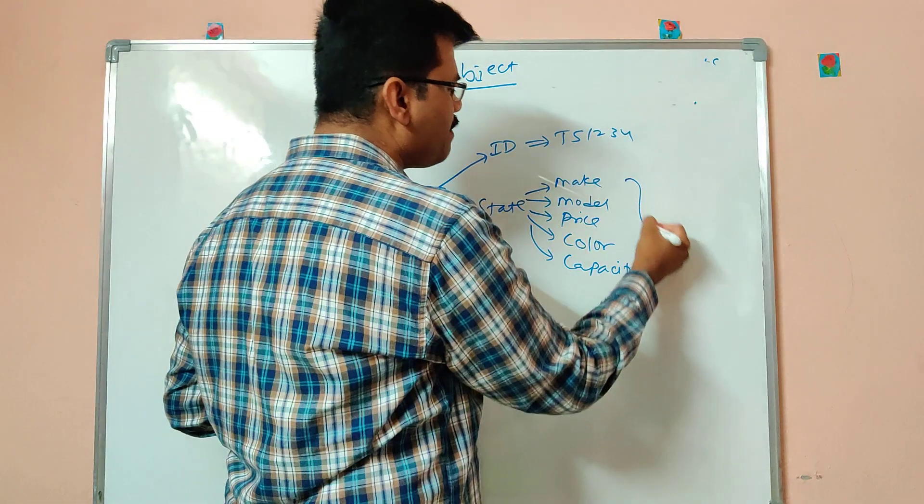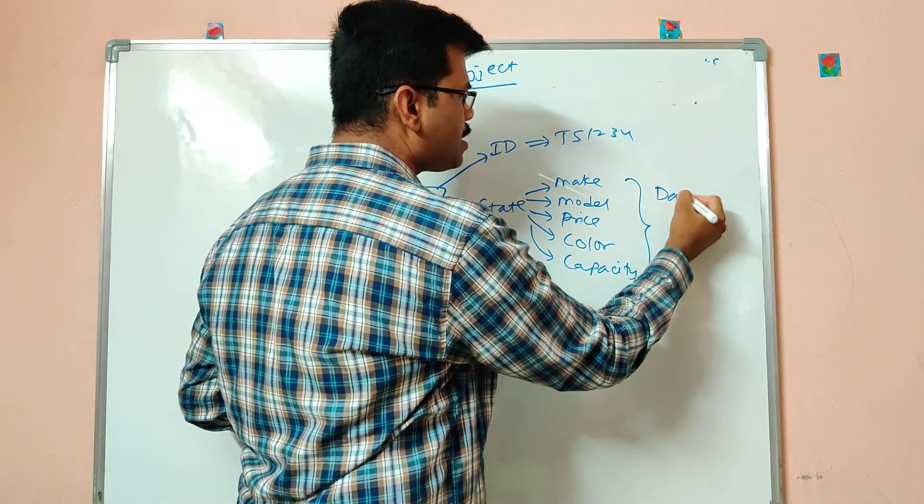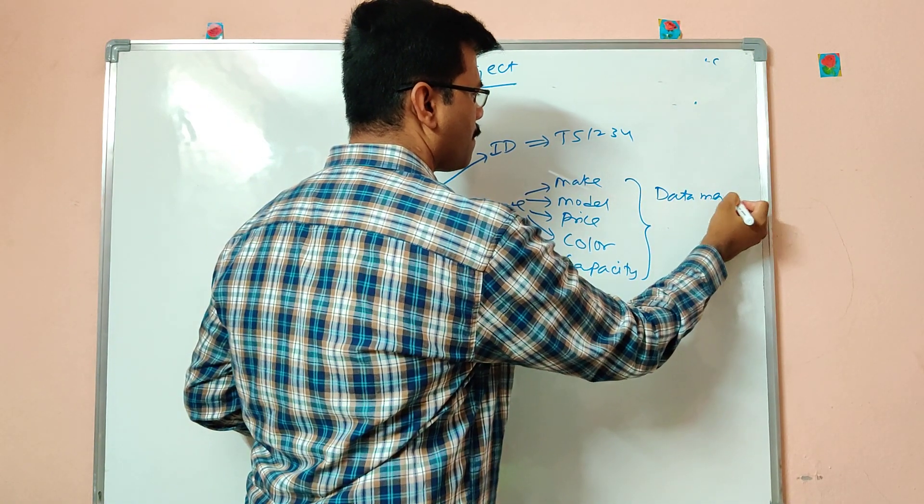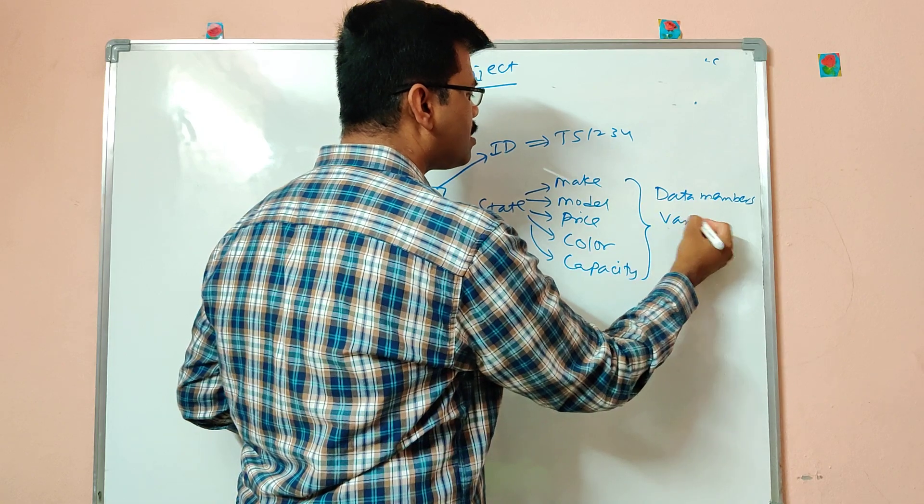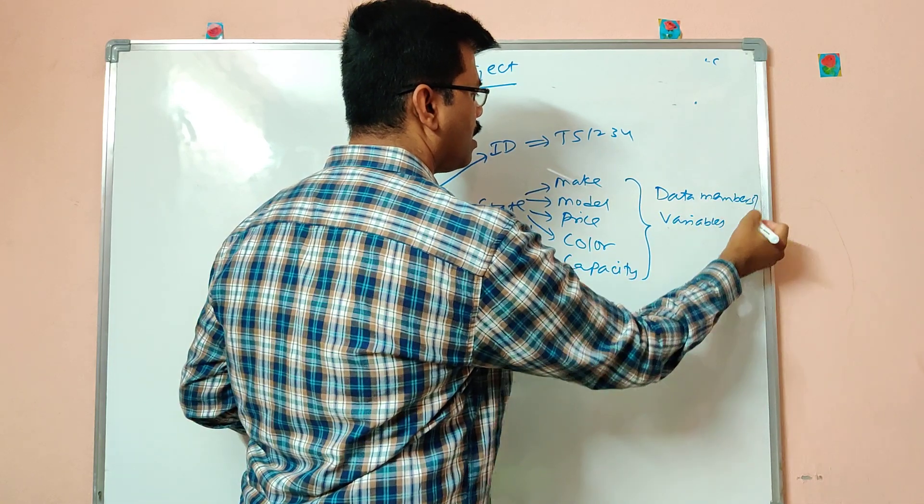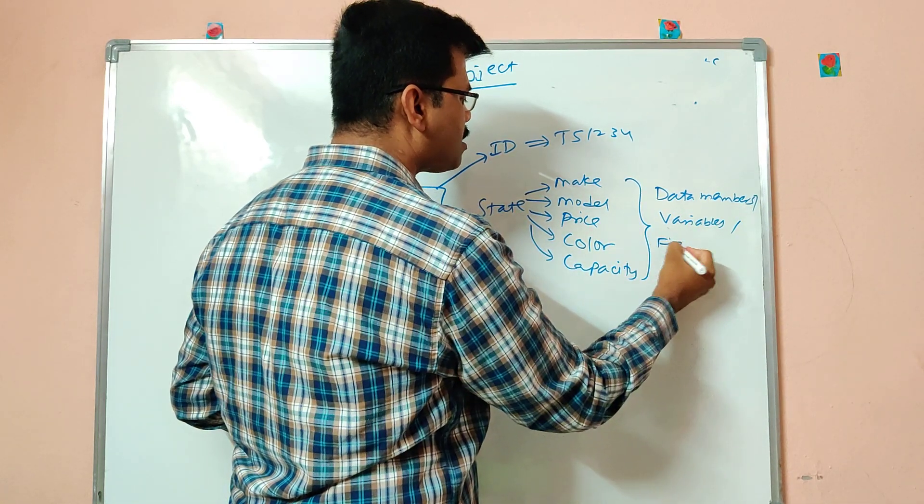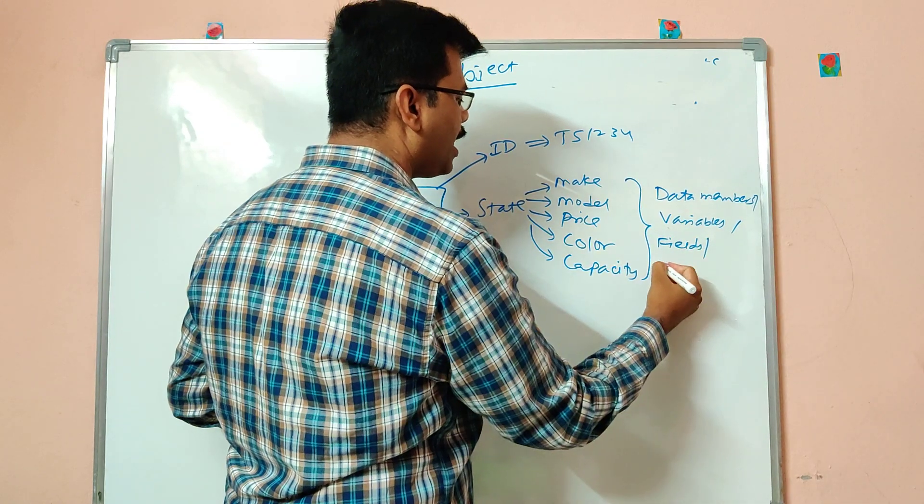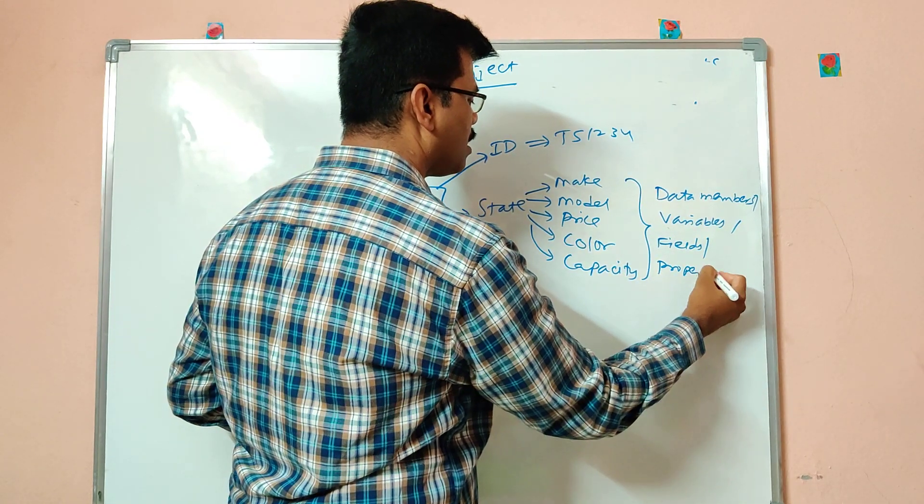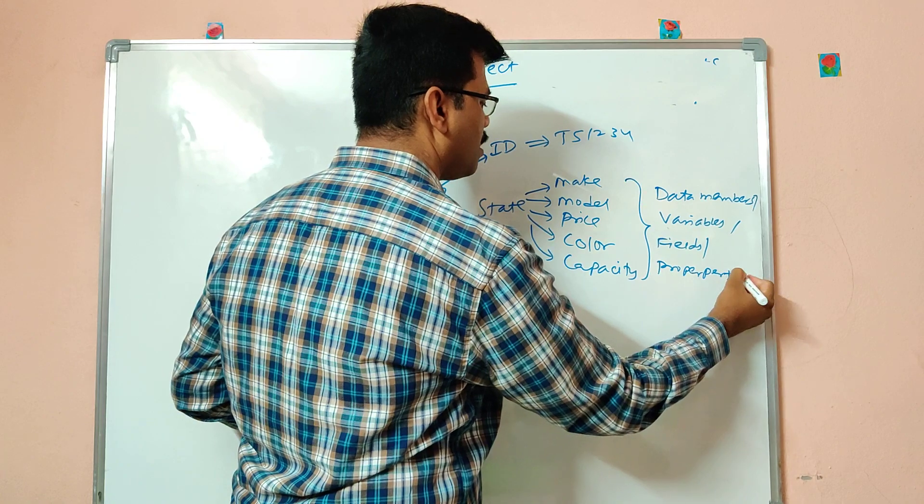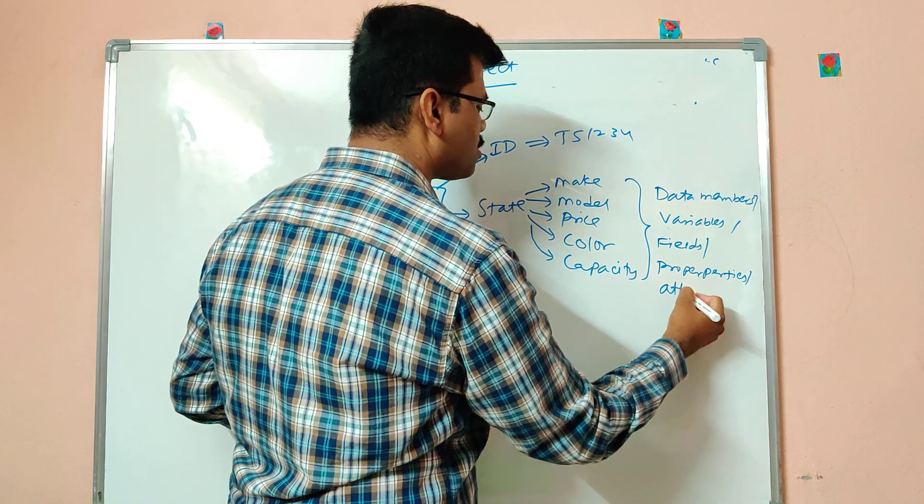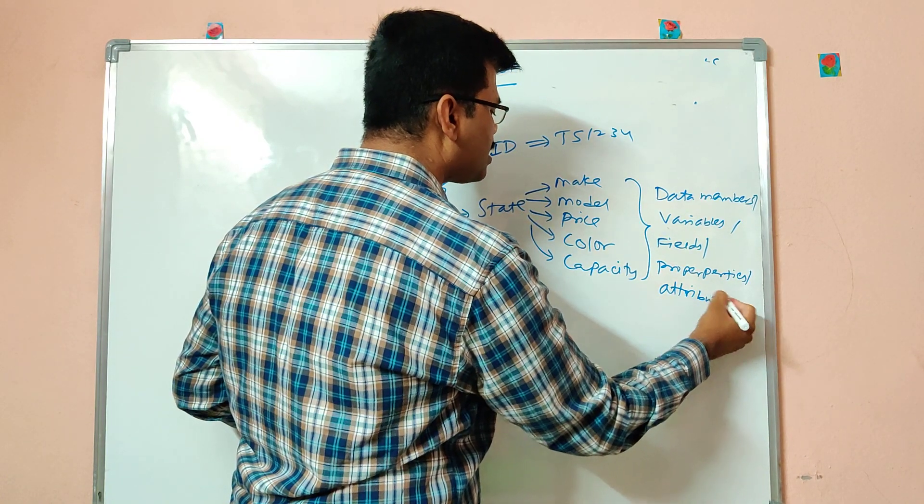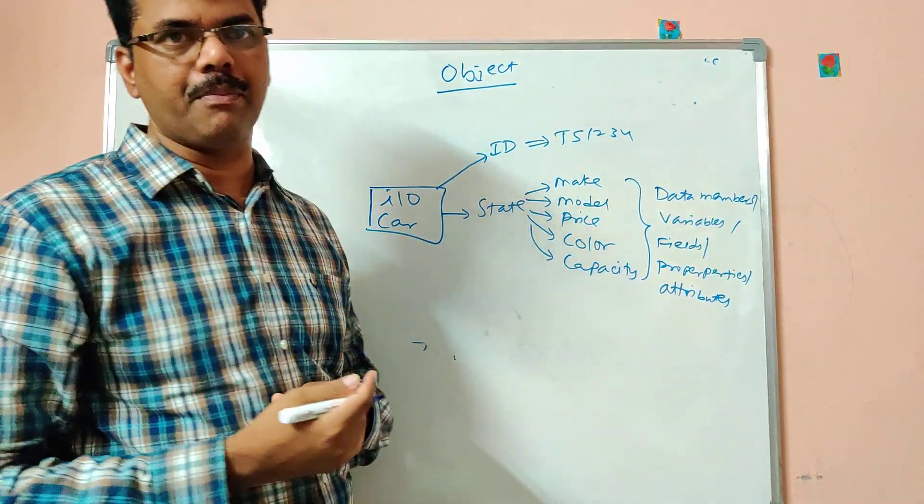And this state even we call it as data members. We call it as variables. Even we call it as fields. We call it as properties. We call it as attributes. All the meanings are same. Different people use different terminologies.